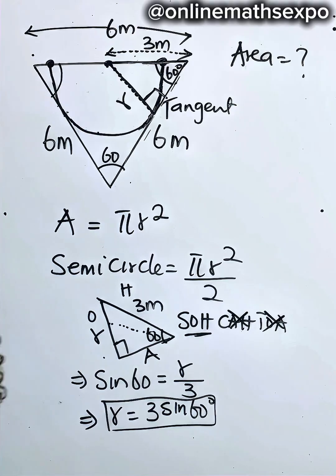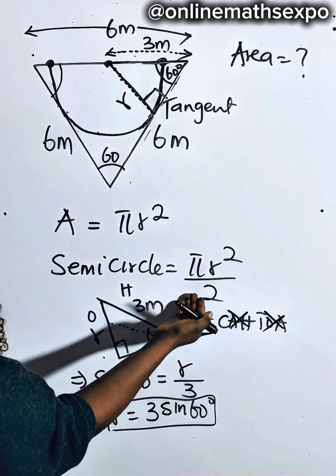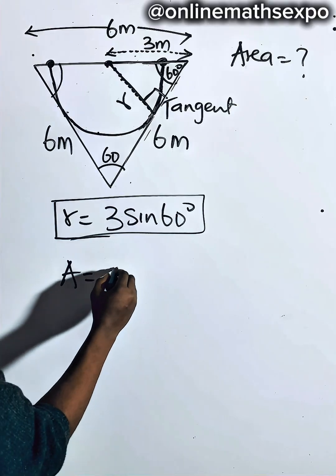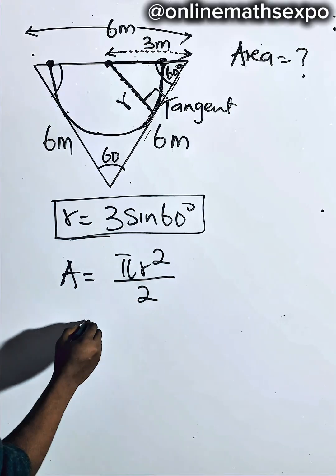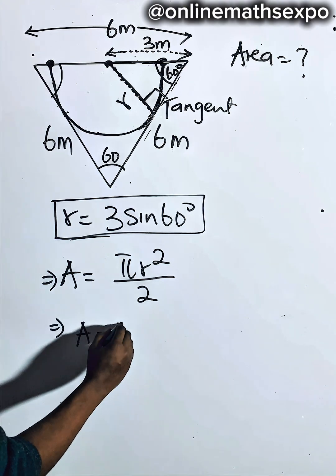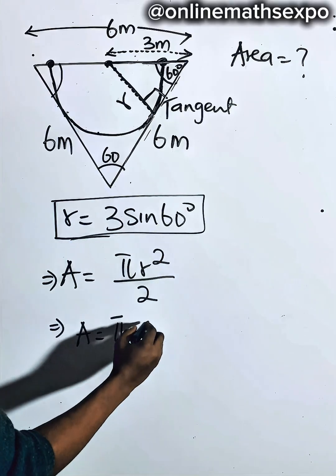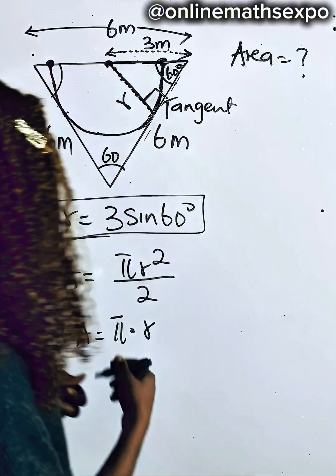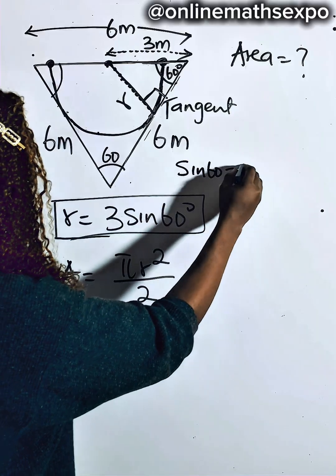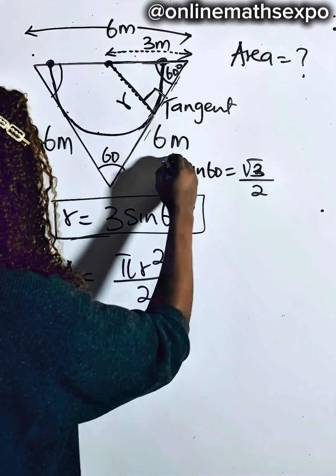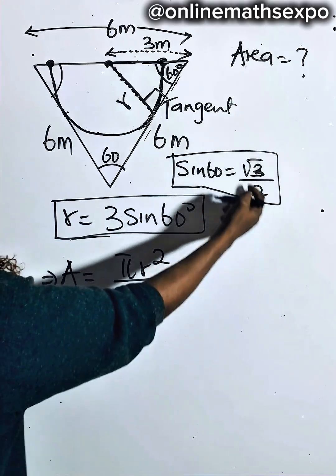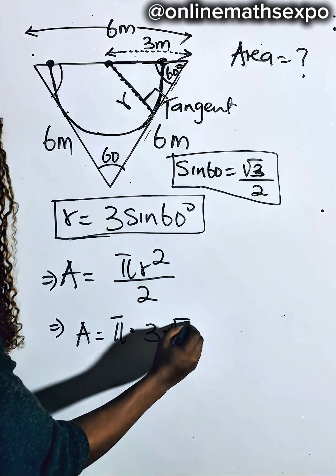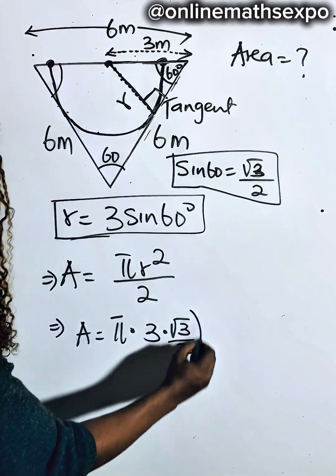Now that we have the radius, we find the area of the semicircle using: Area = π R² / 2. Substituting R = 3 sin(60°), we get Area = π × (3 sin 60°)² / 2. Since sin(60°) is a special angle equal to √3 / 2, we replace it: R = 3 × (√3 / 2) = 3√3 / 2. So Area = π × (3√3 / 2)² / 2.